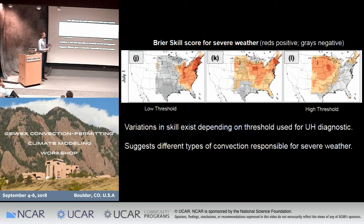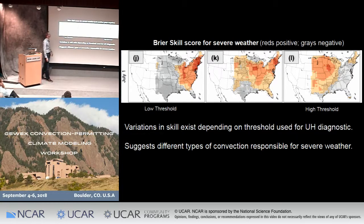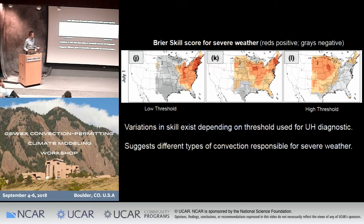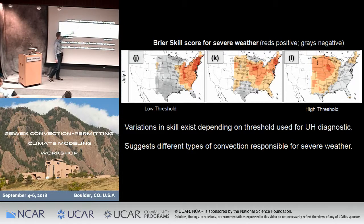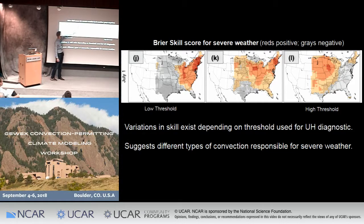This highlights that the surrogate diagnostic has different behavior in the eastern U.S., where we really need to use a low threshold to have a maximum in skill. The reds indicate a positive Brier skill score — skill greater than climatology — and grays indicate negative Brier skill score. In the central plains, we tend to need to use a larger magnitude of this diagnostic. These variations in skill are really driven by different types of convection responsible for severe weather: in the central plains, we have more MCSs and supercells, while in the eastern U.S., there are fewer supercells and lower magnitudes of updraft helicity — but it's still pretty well correlated with updraft speed, so there's decent skill.